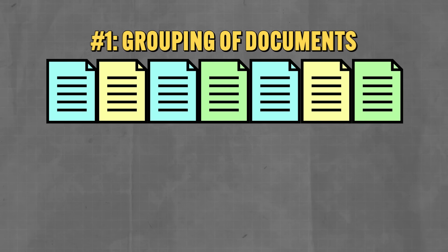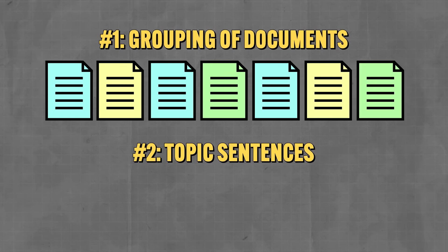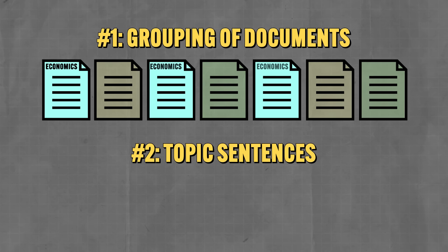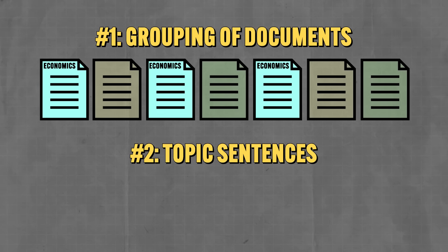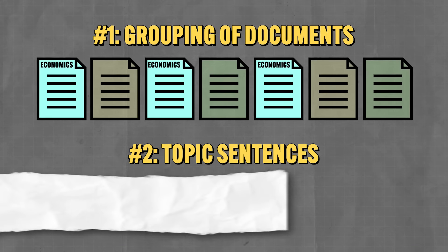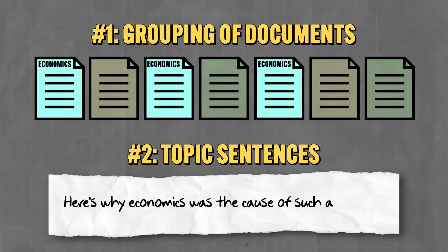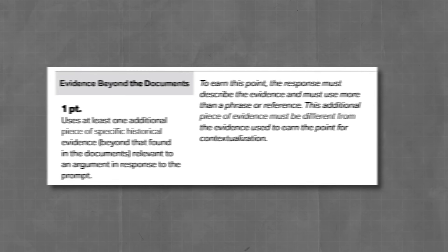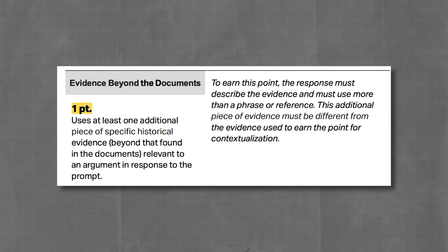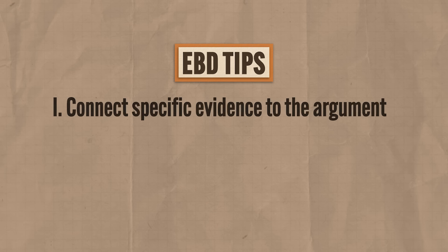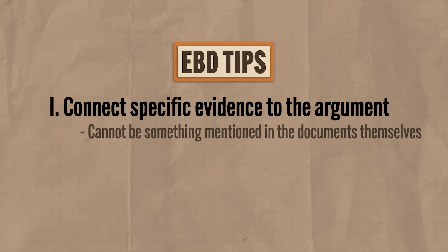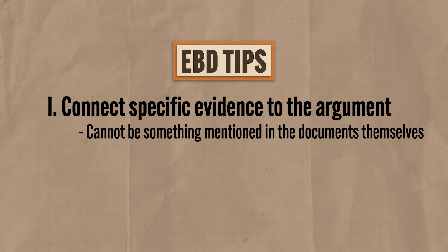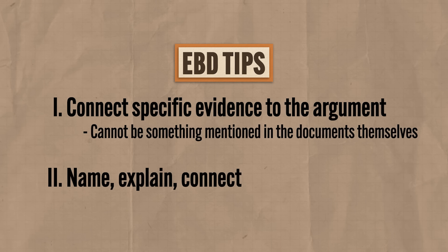The key to getting the evidence points comes down to two things: grouping of documents (which I already talked about) and topic sentences. Suppose I grouped documents one, three, and five as economic documents. I'd start by writing a topic sentence explaining why economics was the cause of such and such, then within the paragraph use my documents to demonstrate why that topic sentence is true. For evidence beyond the documents, you need to connect a specific piece of evidence to the argument — name it, explain what it is, and connect it to your argument. People lose this point because they name the evidence but forget to explain and connect it.